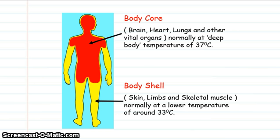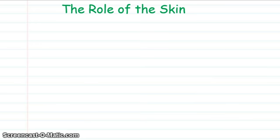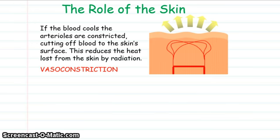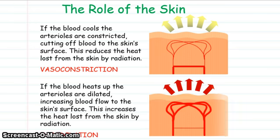The body core — head and torso — generally requires an internal body temperature of 37°C, while the body shell — arms and legs — can survive at slightly lower temperatures. If we are too cold, skin arterioles will close and there'll be less blood flow to the skin, meaning less heat lost by radiation — this is called vasoconstriction. If we are too hot, the skin arterioles will dilate, allowing more blood to go to the skin so more heat is lost by radiation — this is vasodilation.